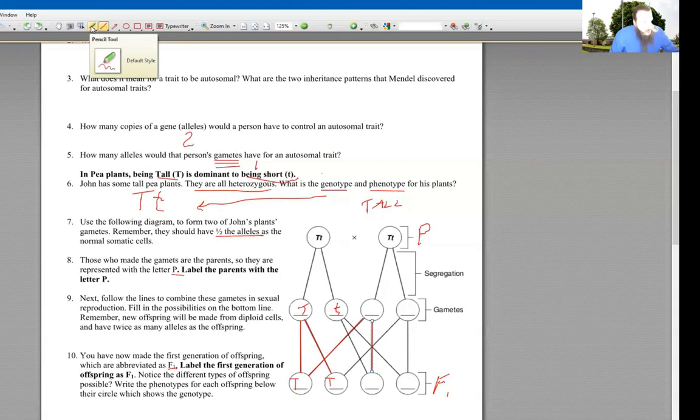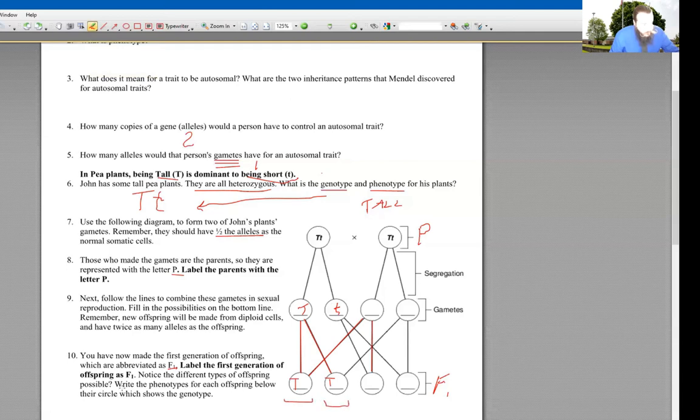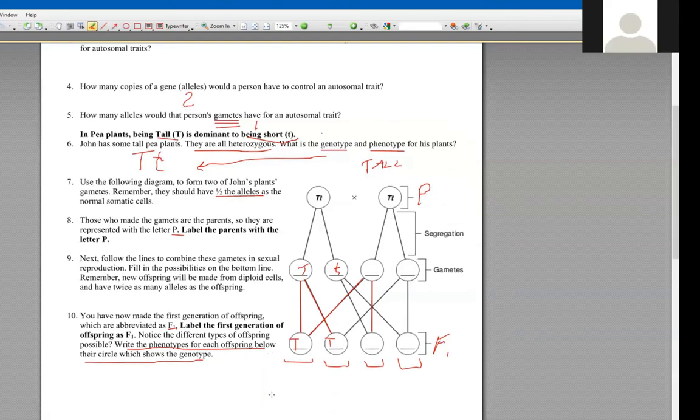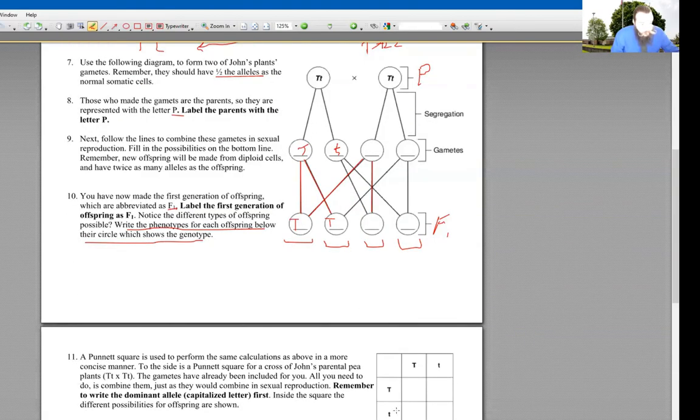And then the only other thing you have to remember to do is below each of these, it says right here we got to write the phenotypes for each offspring below the circle. So each of these plants will either be tall or short. Remember, it's Mendelian, autosomal, so there's no medium-sized plant. It's either tall or short.